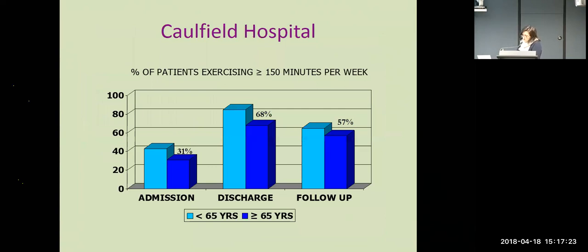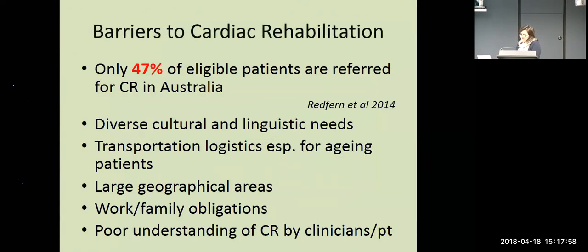Data from our own program shows that people over 65 achieved their improvement in exercising for at least 150 minutes per week — the typical goal we encourage — really well from admission to discharge and maintained at follow-up at 3 and 12 months post-discharge. It is favourably comparable to the younger age group. Despite our open doors, less than half of people who should come to cardiac rehab are actually being referred, and on top of that, a patient may be referred but may choose not to attend.